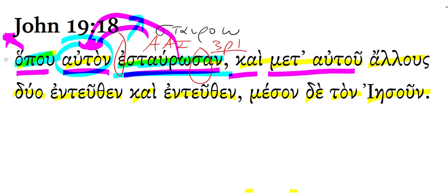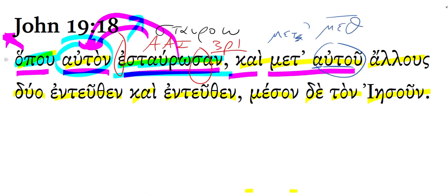And with him — remember, the preposition meta means 'with' when it's followed by the genitive. If it's followed by the accusative, it means 'after.' But here it's followed by the genitive. And when meta begins with a vowel, it becomes met, or if the vowel has a rough breathing mark, it would be meth.